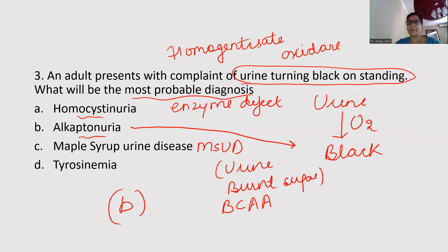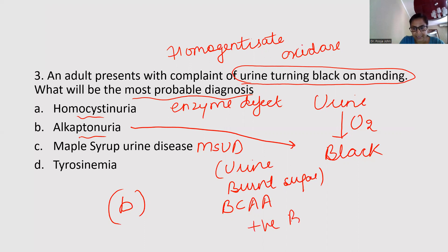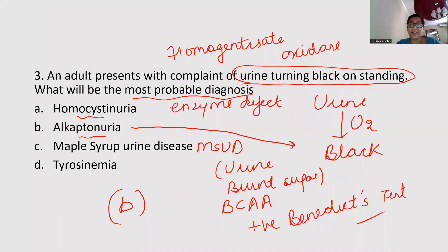Homocystinuria is related to the metabolism of methionine and cysteine. Another very important feature is that homogentisic acid gives a positive Benedict's test — this question was asked two or three years back as a big case history question. This condition also represents ochronosis. So the answer is alkaptonuria and the defective enzyme is homogentisate oxidase.